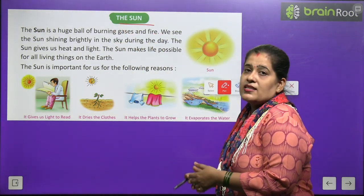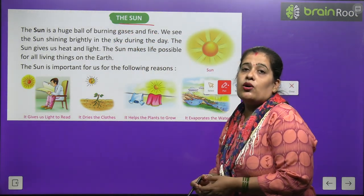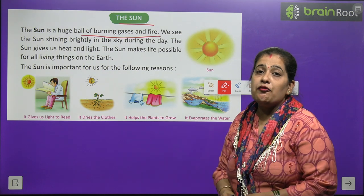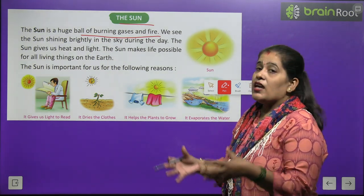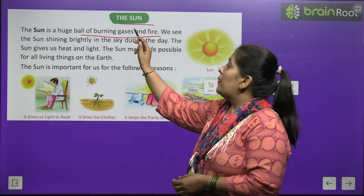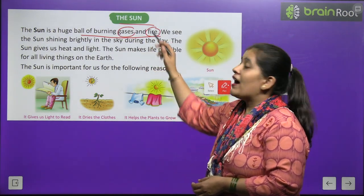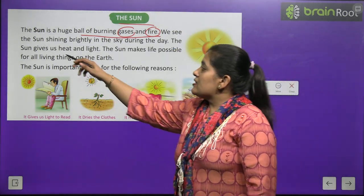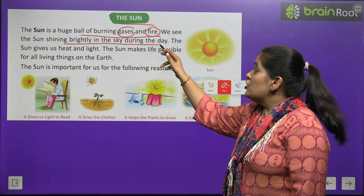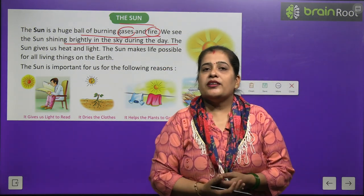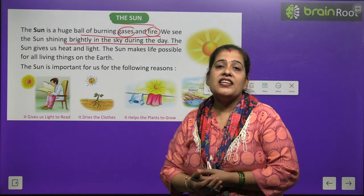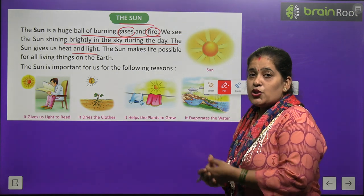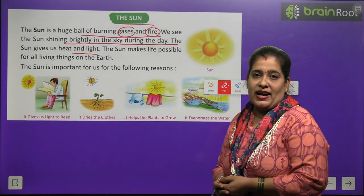Now we will learn about the sun. Sun kya hai? Sun ko hum kehte hain suraj. The sun is a huge ball of burning gases and fire. Ek bahut bada gola hai burning gases aur fire ka. We see the sun shining brightly in the sky during the day. Sun ko hum chamakte hue kab dekhte hain? Din ke samay. The sun gives us heat and light. Suraj hume roshni aur garmahat deta hai.